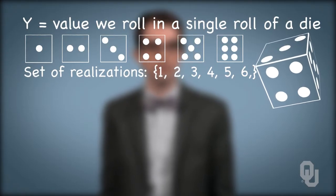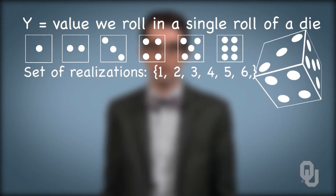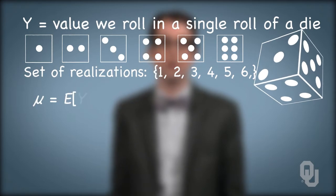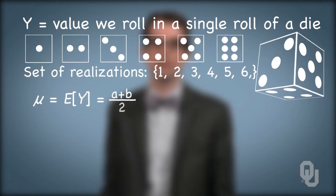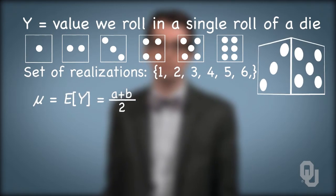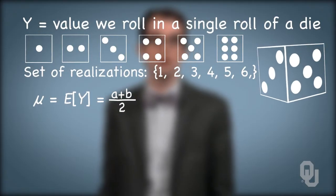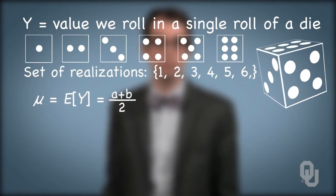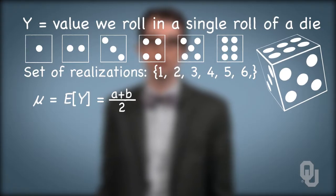The expected value of a discrete uniform distribution is, not surprisingly, just the average of the two bounds: a plus b divided by two. You can check that at home by multiplying each realization by the probability of that realization, one over n, and summing across realizations.